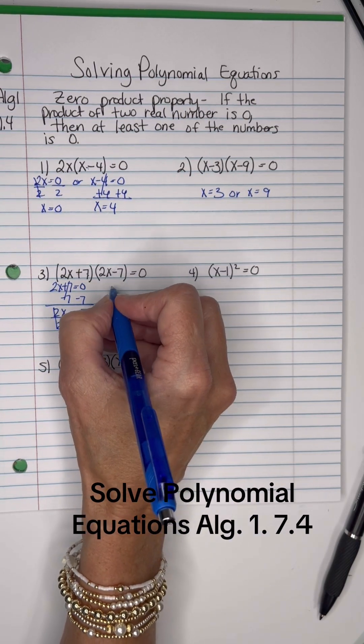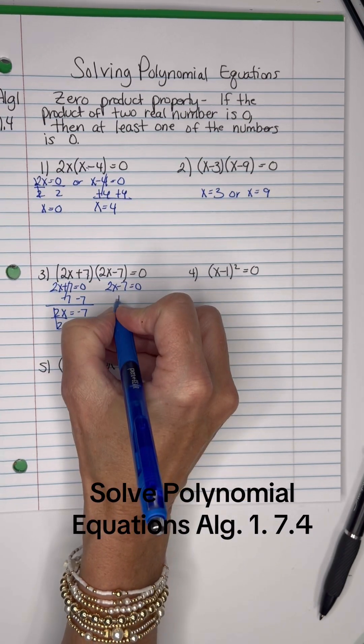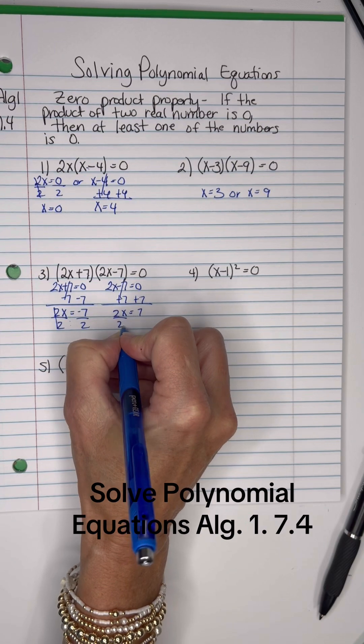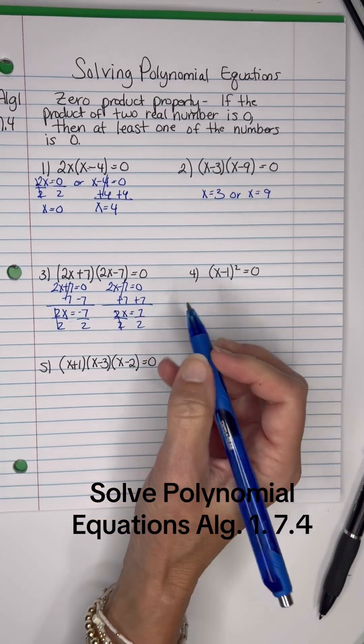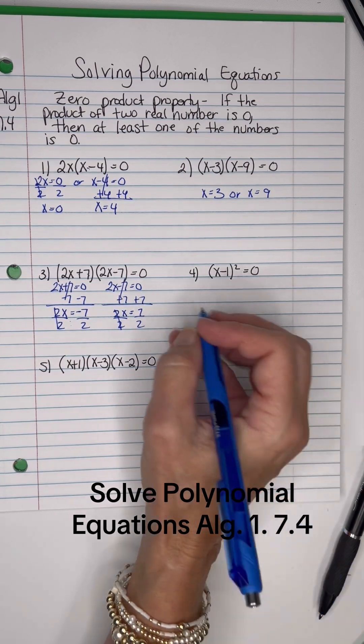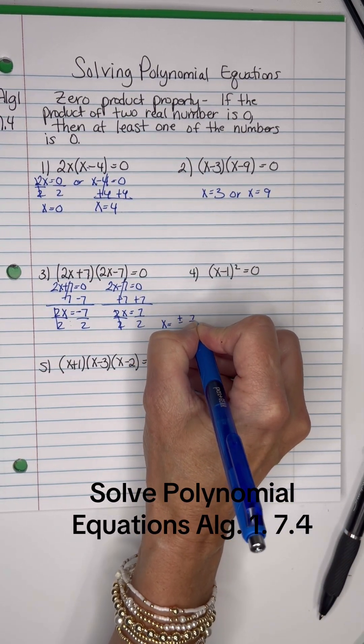So you can do these quickly in your head as well. So 2X minus 7, if it equals zero, add 7 to both sides. 2X equals 7, divide by 2. So I have a positive or a negative 7 over 2. And sometimes people write it like this, positive or negative 7 over 2.